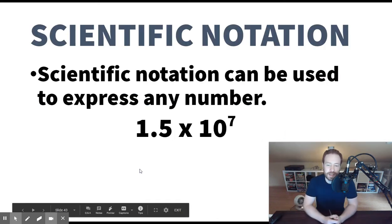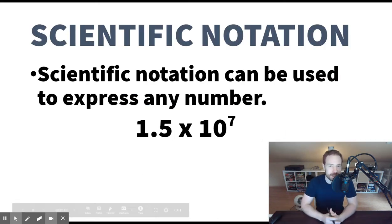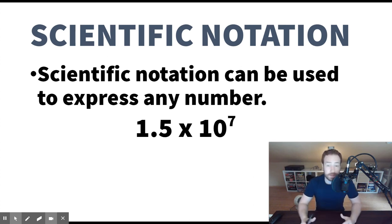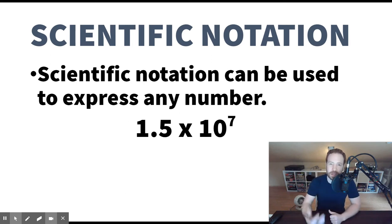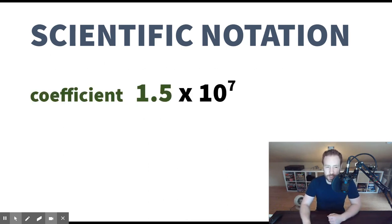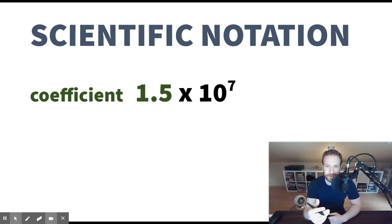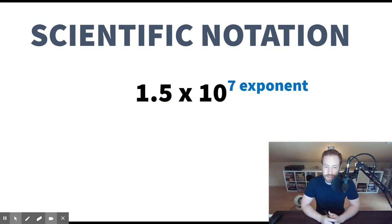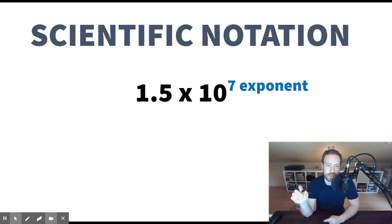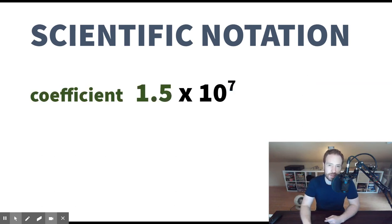So let's get started. This number here in the middle of the screen is a number written in scientific notation. Scientific notation can be used to express any number. However, there are some numbers where it makes more sense to use standard notation — meaning just a regular number written down. Now, there are two parts to any number written in scientific notation. There is the coefficient, and then there is the exponent. The times 10 is always in the middle, so scientific notation will always have a times 10 in the middle. The two parts that vary are the coefficient and the exponent.